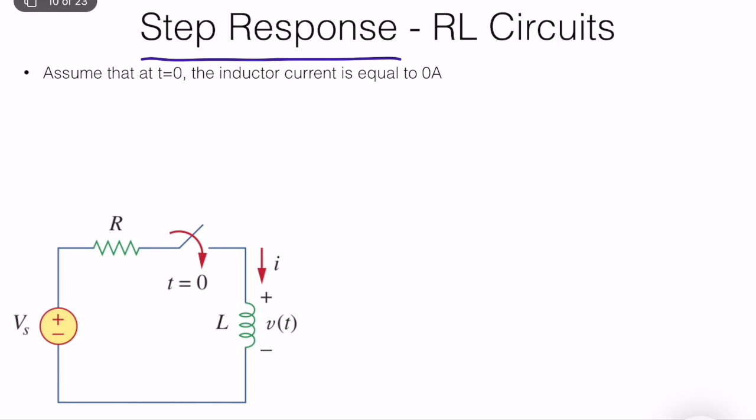So let's try to remember our knowledge and how we can analyze these circuits. We have a voltage source and a resistor. In this circuit, at time t equal to zero, we close the switch. It's given that the initial condition of the inductor current is equal to zero at time equal to zero minus, just before we close the switch. So we close the switch and the current is zero.